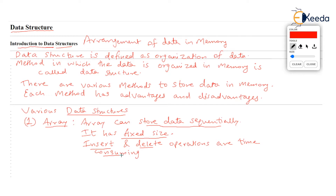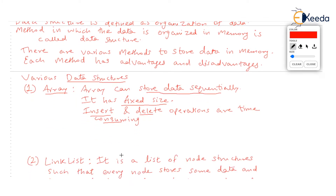So array is a data structure, isn't it? Anything which stores data is called a data structure. Anything which has an arrangement is called a data structure. So array is a data structure.